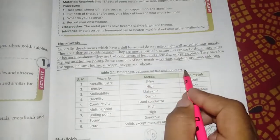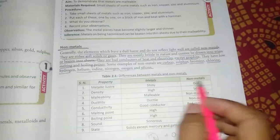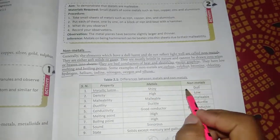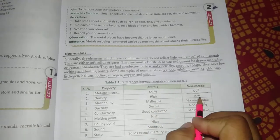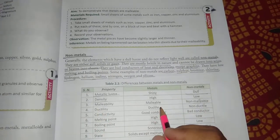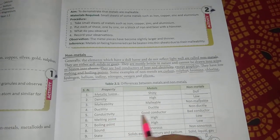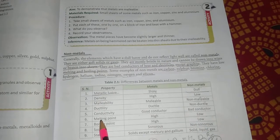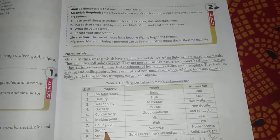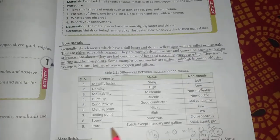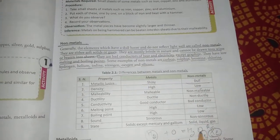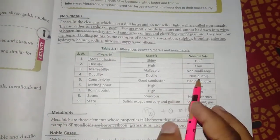Now let's read the differences between metals and non-metals. Metallic luster property is shiny while non-metals are dull. Density is high in metals and low in non-metals. Malleability is in metals, non-metals are non-malleable. Ductility is in metals, non-metals are non-ductile. Conductivity: metals are good conductors, non-metals are bad conductors. Melting point or boiling point is high in metals and low in non-metals. Metals produce sound, non-metals do not. State: metals are solid except mercury and gallium. Non-metals can be solid, liquid, or gas.